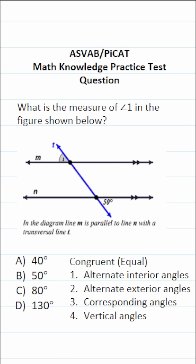When a transversal intersects two parallel lines, several pairs of angles are congruent or equal. I have those pairs of angles listed out right here.